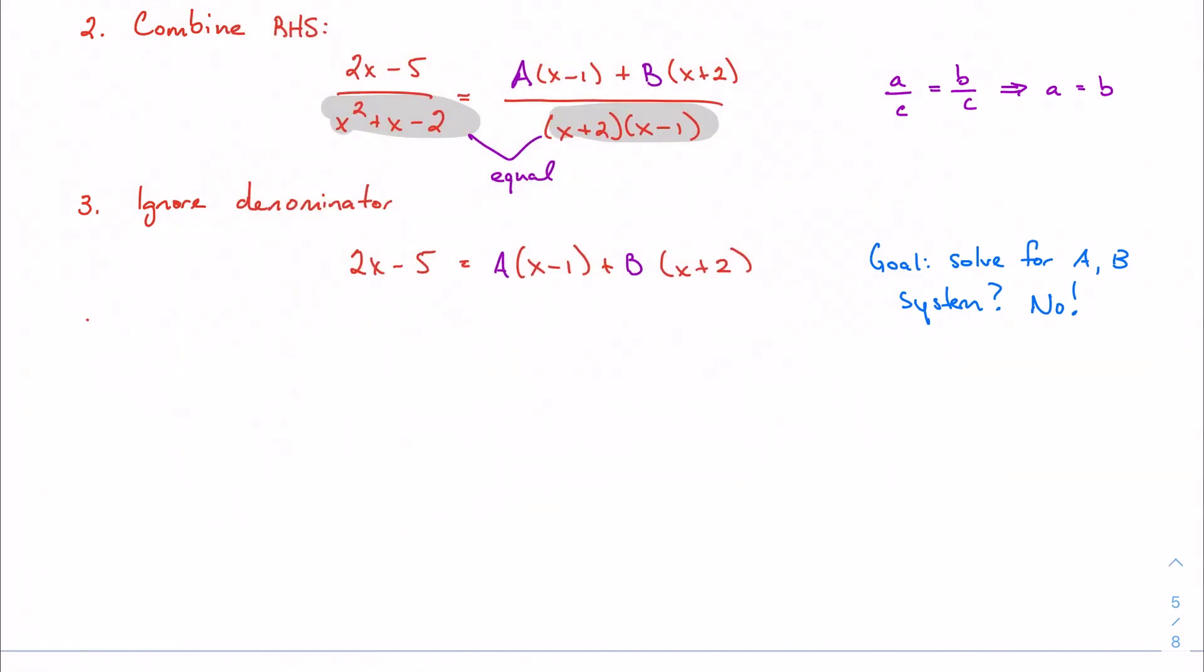And the way we're going to make it much easier, instead of substituting any value we feel like, we're going to substitute what we call convenient values. That's not a technical term. That's something I made up. We're going to substitute convenient values into x to eliminate one unknown at a time. We're going to repeat this step as often as we need to.